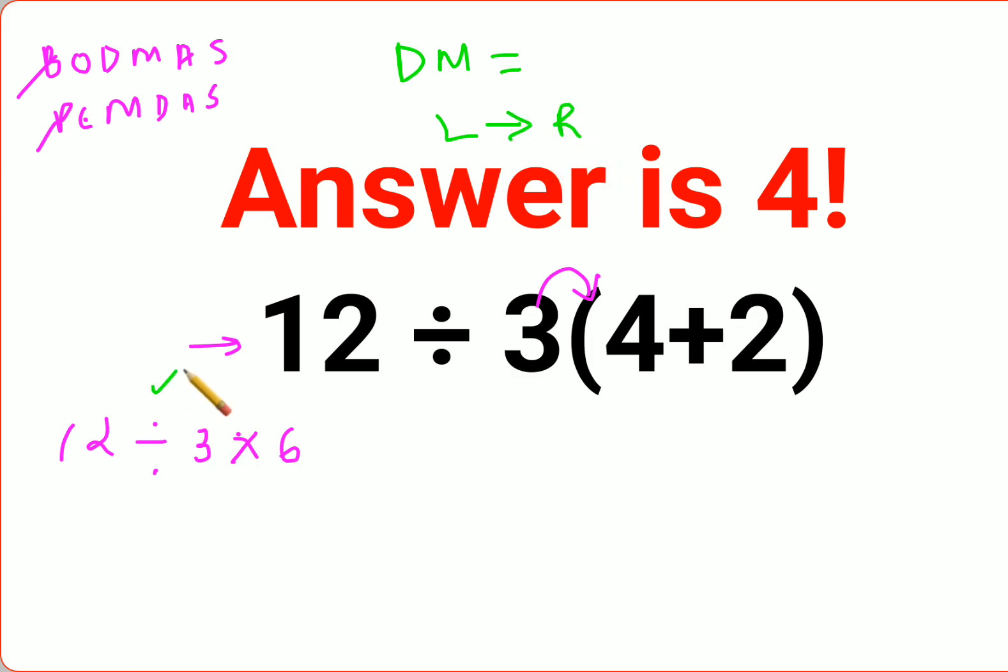Whatever operation comes first on the left has to be done first. So 12 divided by 3 is 4, times 6 gets you 24.